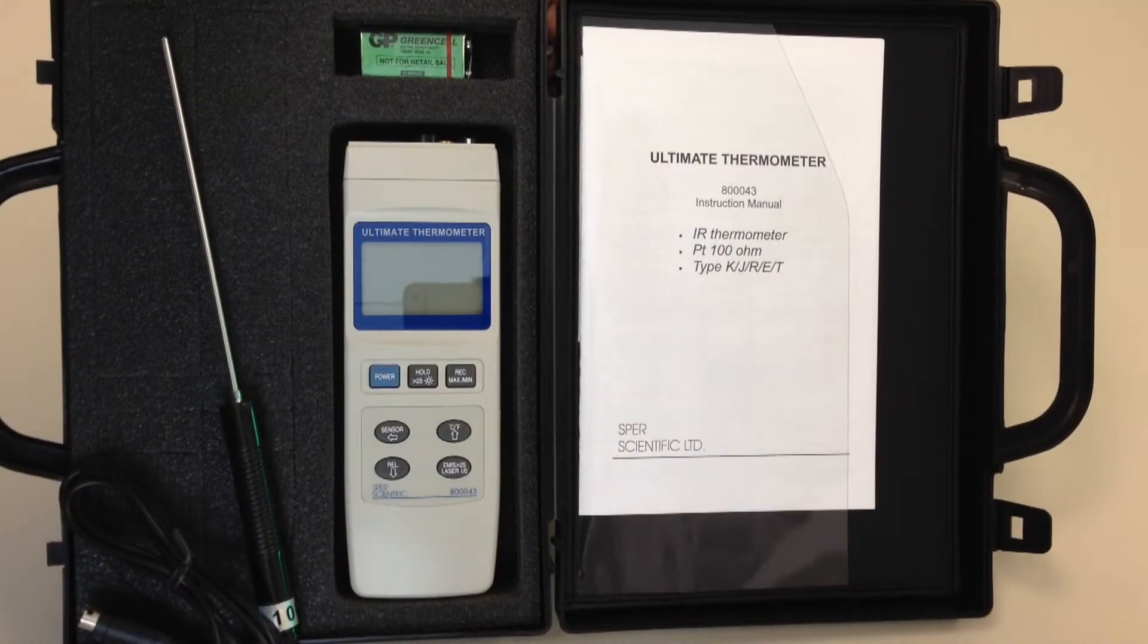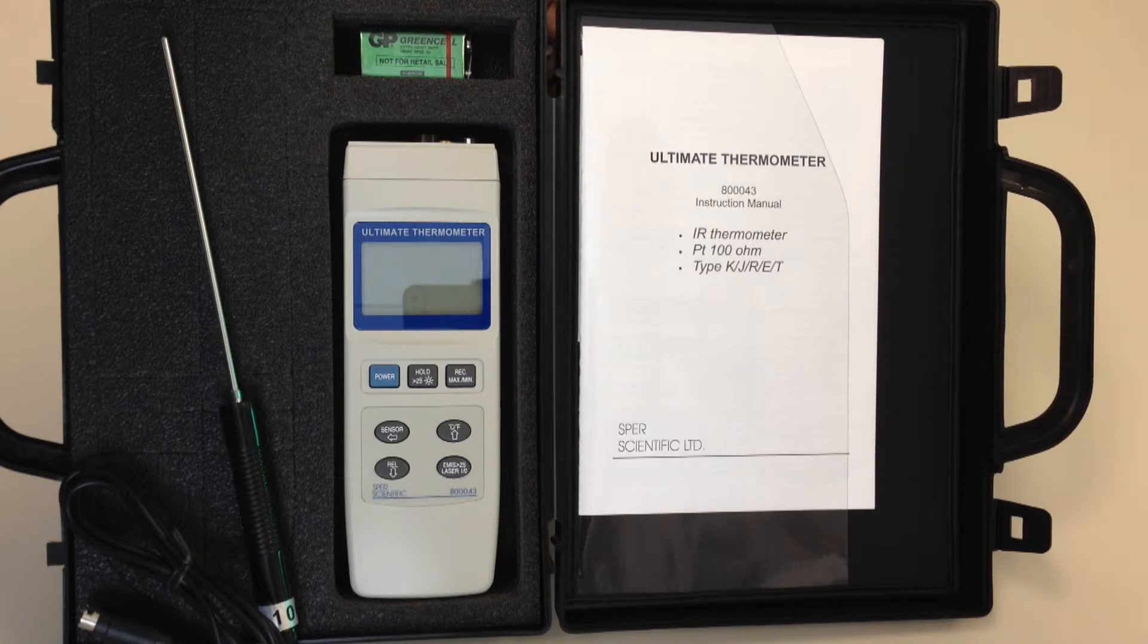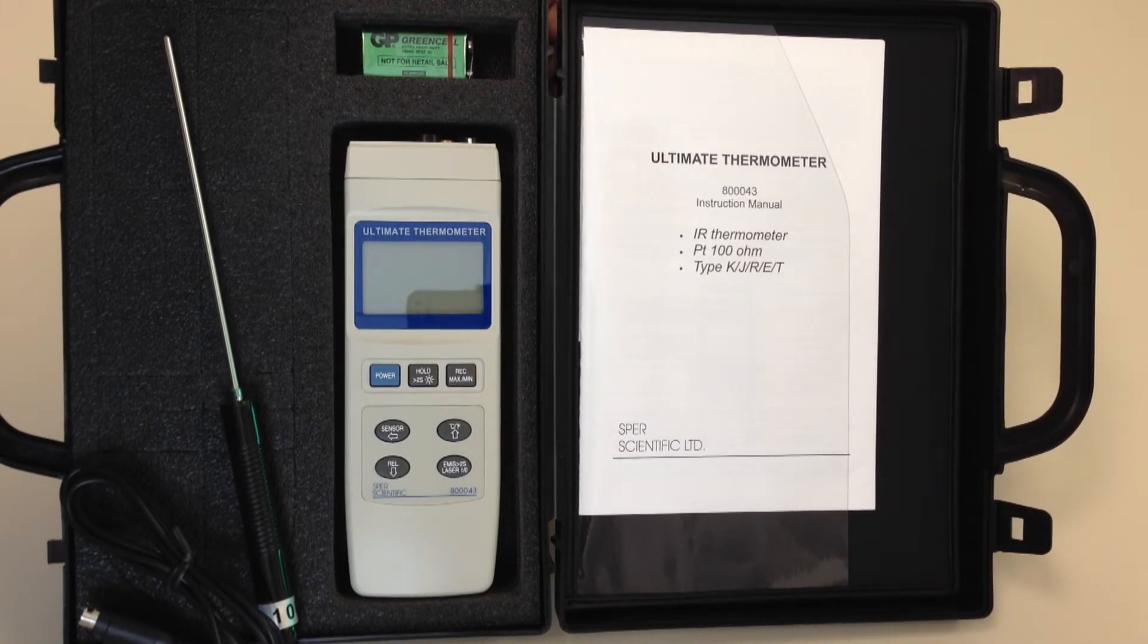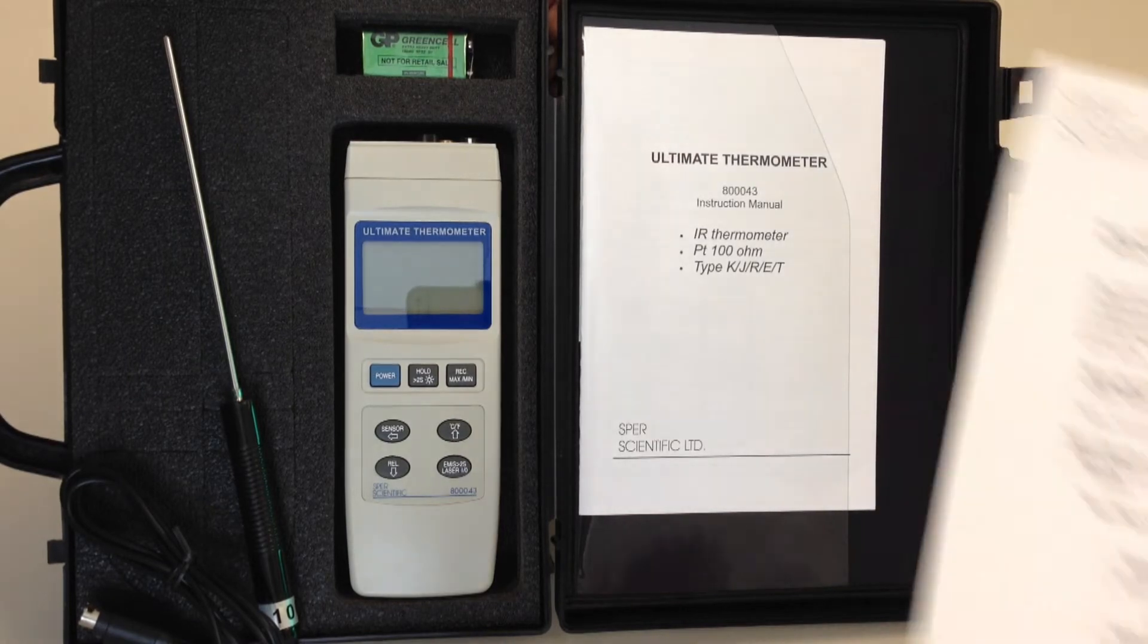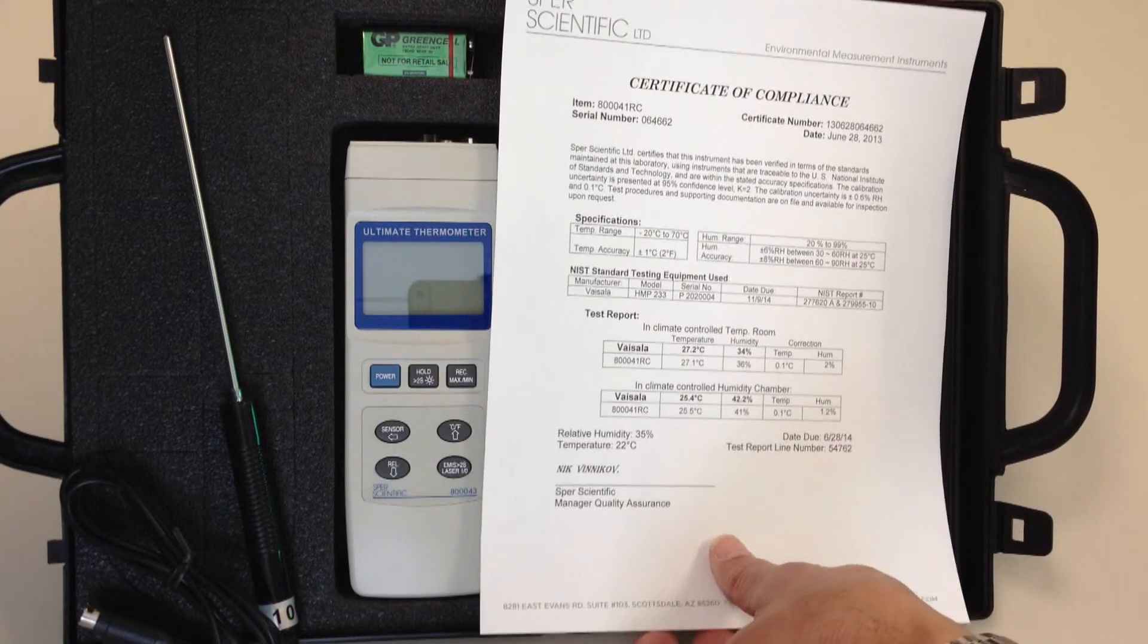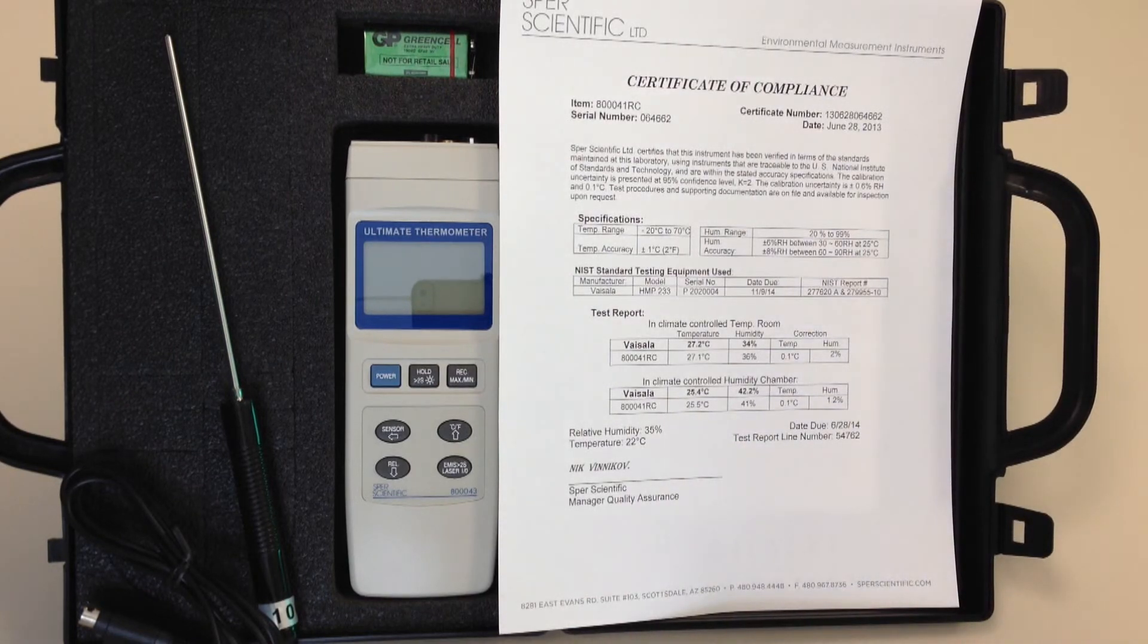Spear Scientific's Ultimate Thermometer comes in a hard carrying case with instructions, PT100 RTD probe, and a 9-volt battery. An optional NIST traceable certificate of compliance is also available.